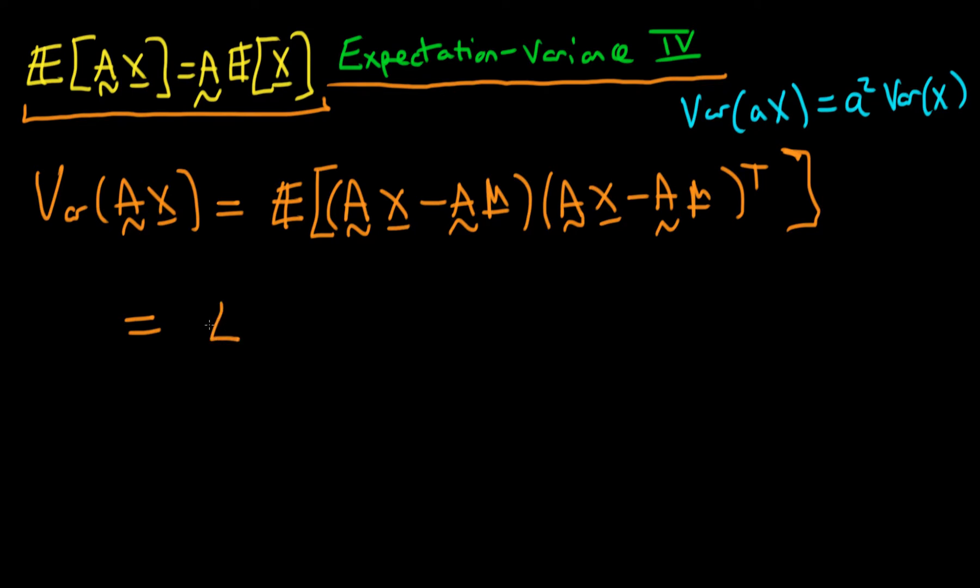What we can do is we can define this as being equal to the expectation of A times (x minus mu). So we've just taken out our constant matrix A. And then in the second term we're going to take out our matrix A, but because we're taking it transposed we're actually going to get (x minus mu) transposed times A transposed. Because we know that when we take the transpose of a product the order actually inverts.